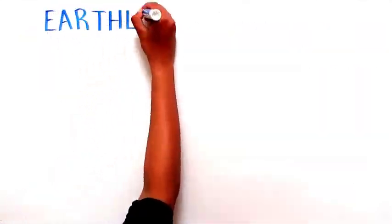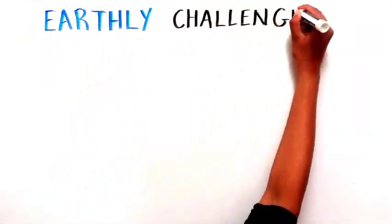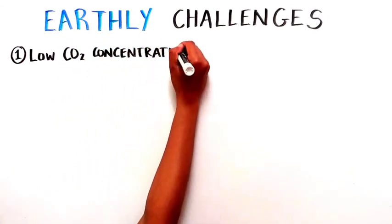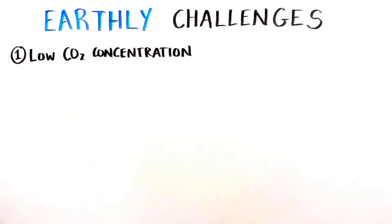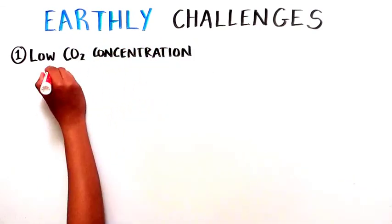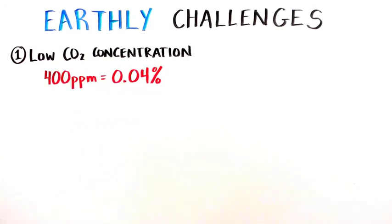However, direct air capture has some earthly challenges that need to be overcome. The first is that the concentration of CO2 in ambient air on Earth is very low—only 400 parts per million, or 0.04 percent.